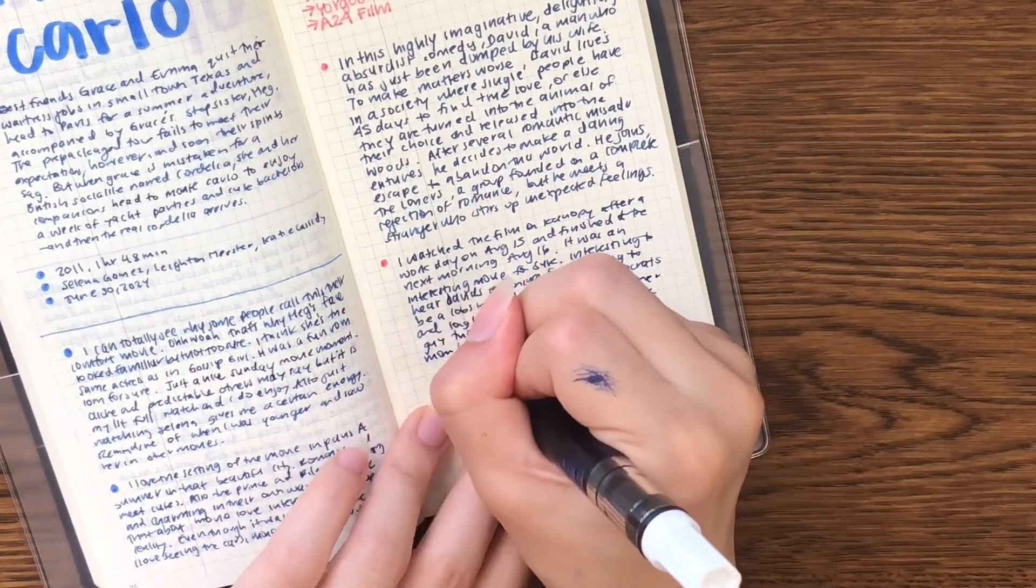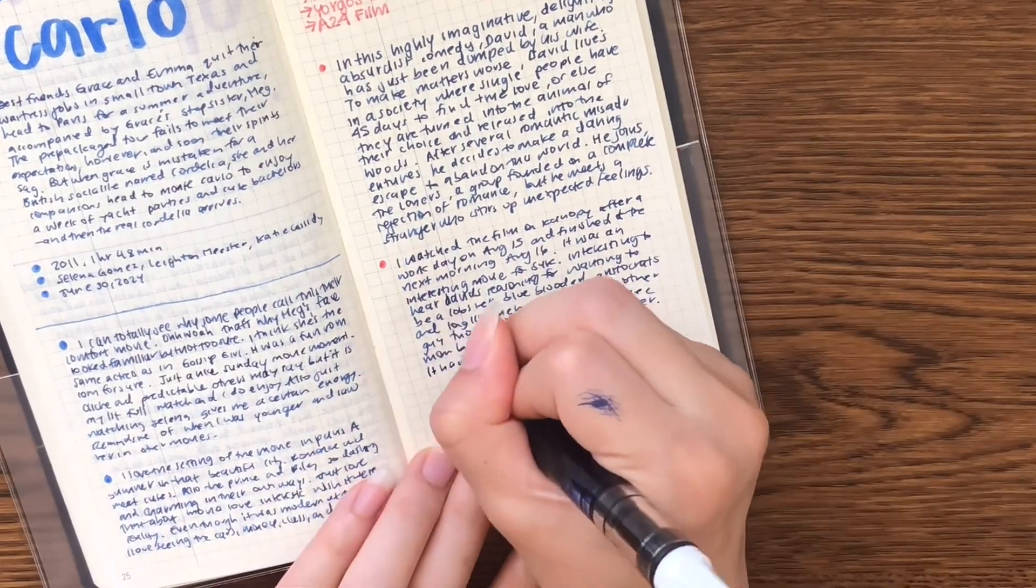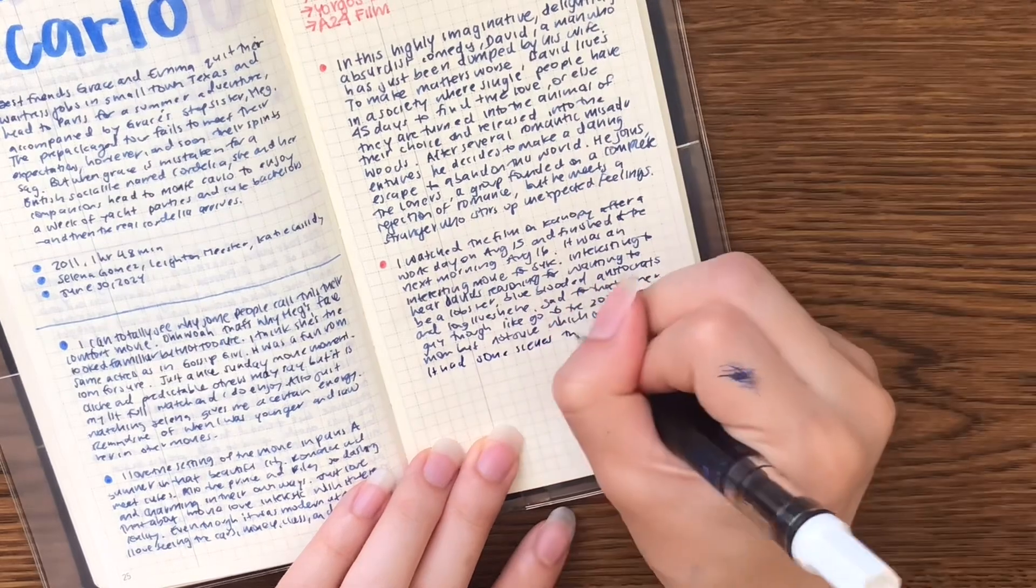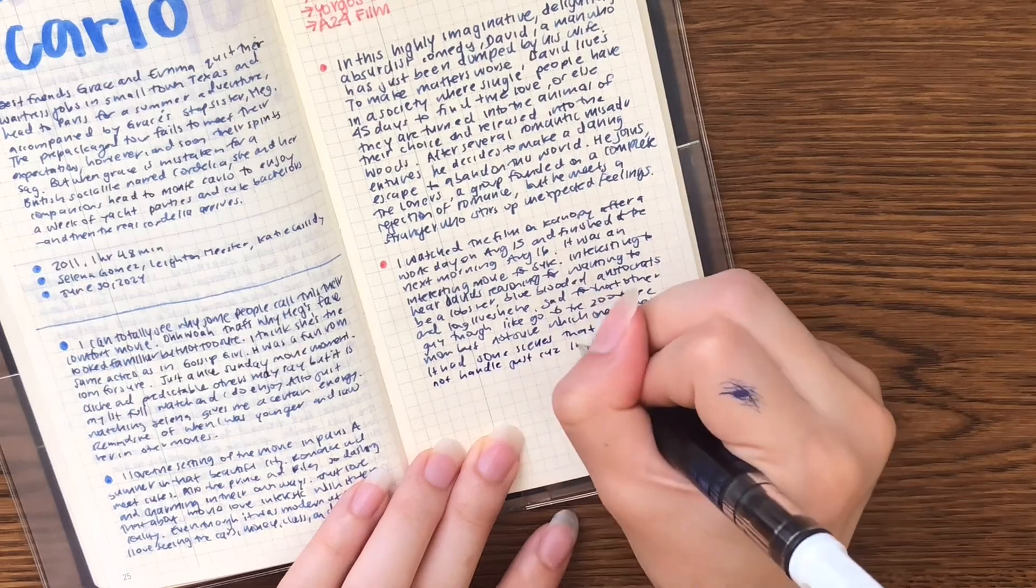Once the event is completed I would check it off or cross it out if it didn't happen. On the right column of the left page I would use it to track my tasks I need to do. I would put a square if it's a must-do task for the day, and then I'll put a circle if it's a task that I want to do but it's okay if I don't get that done.